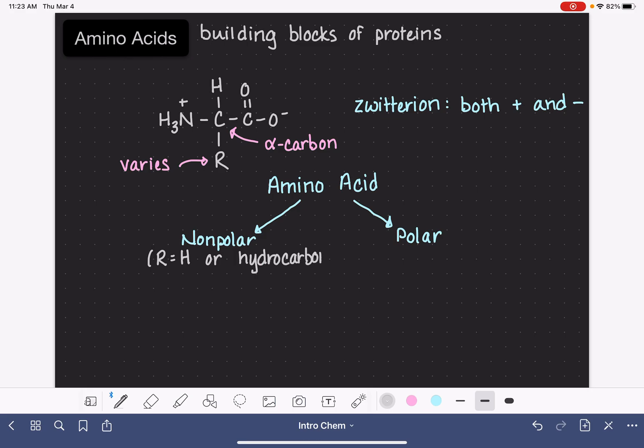So for a non-polar amino acid, this R group is either hydrogen, or it's a few atoms, but all of the atoms are either hydrogen and carbon. There's no oxygens, no nitrogens, no sulfur, or nothing like that.